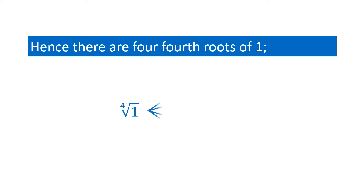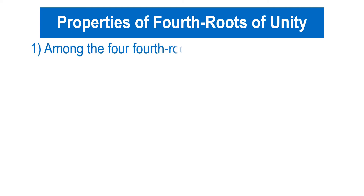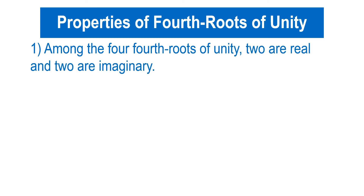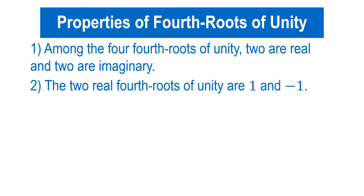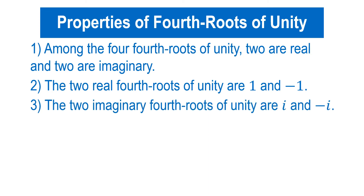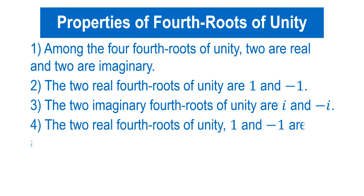Hence, there are four fourth roots of 1: number 1 is 1, number 2 is −1, number 3 is iota, and number 4 is −iota. The two real fourth roots of unity are 1 and −1, and the two imaginary fourth roots of unity are iota and −iota.